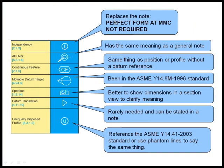The circle I replaces a note that we used to put on our drawings to override rule one, which was perfect form at MMC not required. The double circle where the leader breaks means all over, which has the same meaning as a general note — it's an unless otherwise specified application, usually for profile of a surface. Continuous feature is something we can do using position or profile without a datum reference, as we used to do in composite callouts. So we really don't need that symbol; it's just a shorthand.